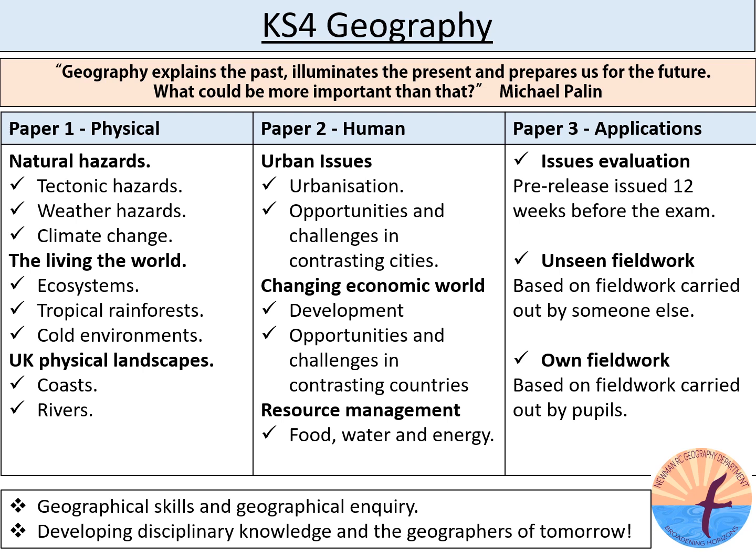Paper 2 is also divided into three sections. In Section A students will learn about urbanisation and contrasting cities — the similarities and differences between them, the opportunities and challenges they present, and how these challenges can be managed. In Section B students will learn about two countries at different stages of their development: the UK, a high income country, and Nigeria, a newly emerging economy. Students will look at the context of these countries to help explain their levels of development, and learn about the opportunities and challenges faced by both countries as they continue in their development.